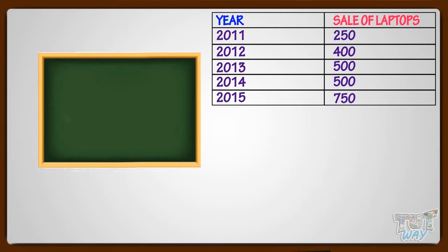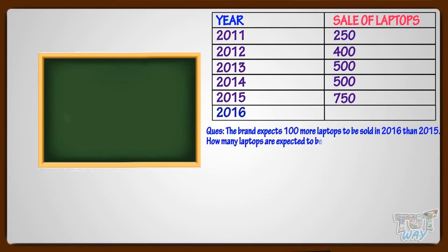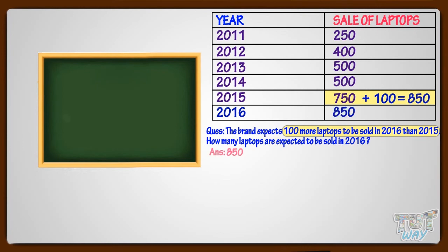The brand expects 100 more laptops to be sold in 2016 than 2015. How many laptops are expected to be sold in 2016? We are given that 100 more are expected in 2016 than 2015. Thus, we have to add 100 to the laptops sold in 2015. From the table we see that 750 laptops were sold in 2015. So, adding 100 to it, we got 850 laptops expected to be sold in 2016.